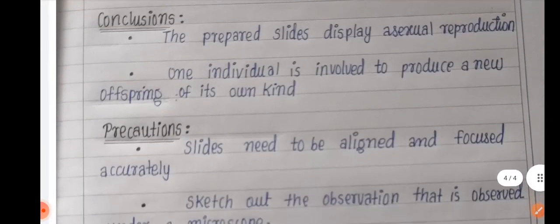For observations, write that the prepared slides display asexual reproduction, where one individual is involved to produce a new offspring of its own kind.